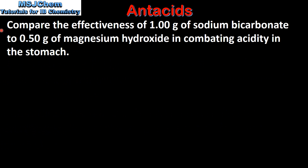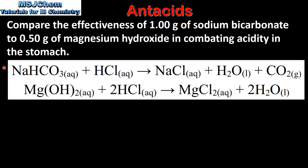Next we look at an example question: compare the effectiveness of 1 gram of sodium bicarbonate to 0.5 grams of magnesium hydroxide in combating acidity in the stomach. We'll start by writing the chemical equations for sodium bicarbonate and magnesium hydroxide with hydrochloric acid. From the balanced chemical equation, 1 mole of sodium bicarbonate reacts with 1 mole of hydrochloric acid, and 1 mole of magnesium hydroxide reacts with 2 moles of hydrochloric acid.